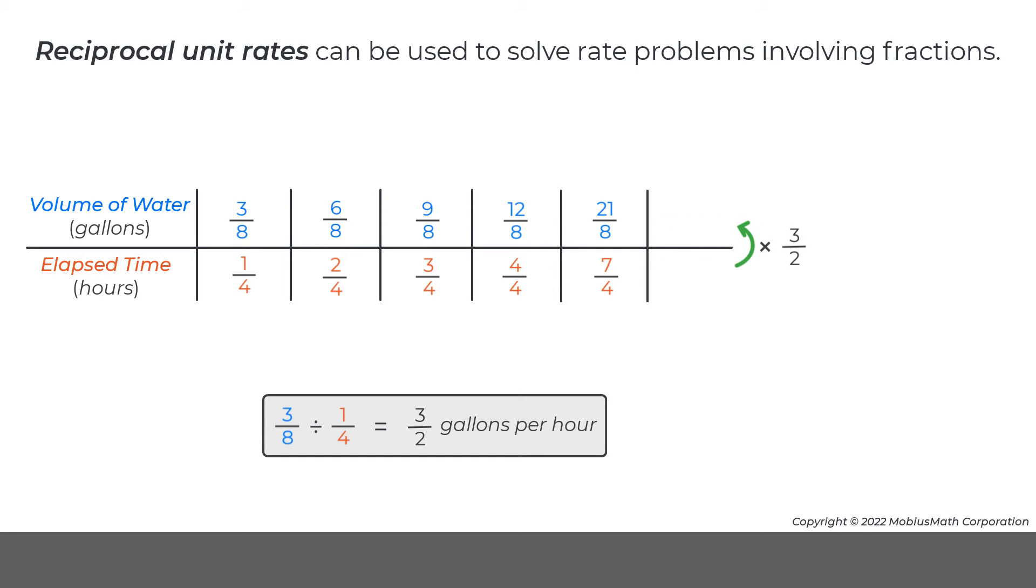So any value for elapsed time can be listed in the bottom row. Then, the value for time can be multiplied by 3 halves to find the volume of water that has leaked from the faucet in that amount of time.